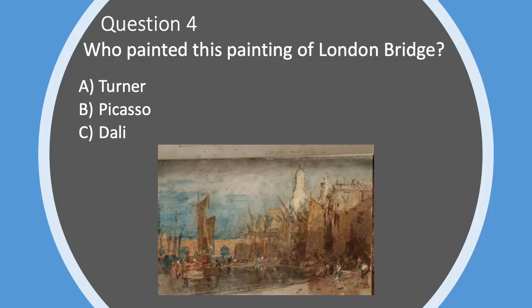Question four. Who painted this painting that you can see on your screen of London Bridge? Was it A. Turner, B. Picasso, or C. Dali?